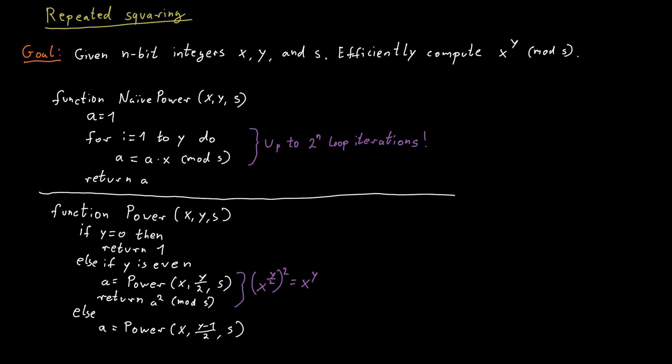This ensures that if y is odd, then y minus 1 is even, so it's divisible by 2. And then we compute that mod s and we return that number squared and multiply it by x. And then we take mod s to keep the number small and we return the result.